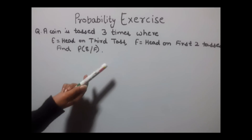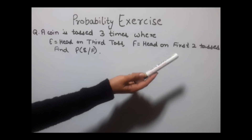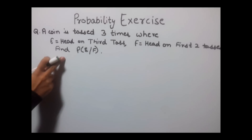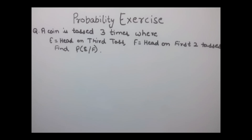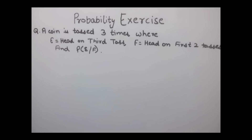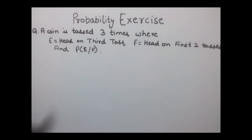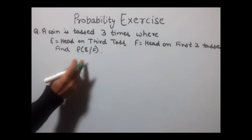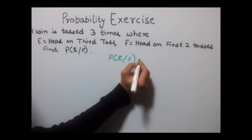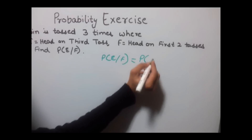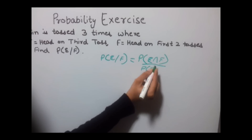A coin is tossed 3 times where E is equal to head on the third toss and F is equal to head on the first two tosses. We need to find out the probability of event E given event F. This is an example of conditional probability, which means what is the probability of event E happening when event F has already taken place. The formula for conditional probability is: probability of E given F equals probability of E intersection F divided by probability of event F.